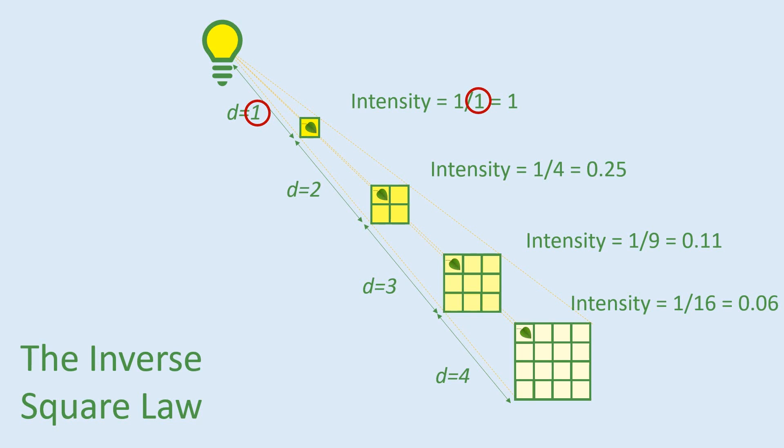At distance two, to work out the intensity, it was one divided by four or one divided by the distance two squared. One over two squared is the same as one over four. At distance three, it was one over nine or one over three squared. And finally, at distance four, it was one over four squared, one over 16.